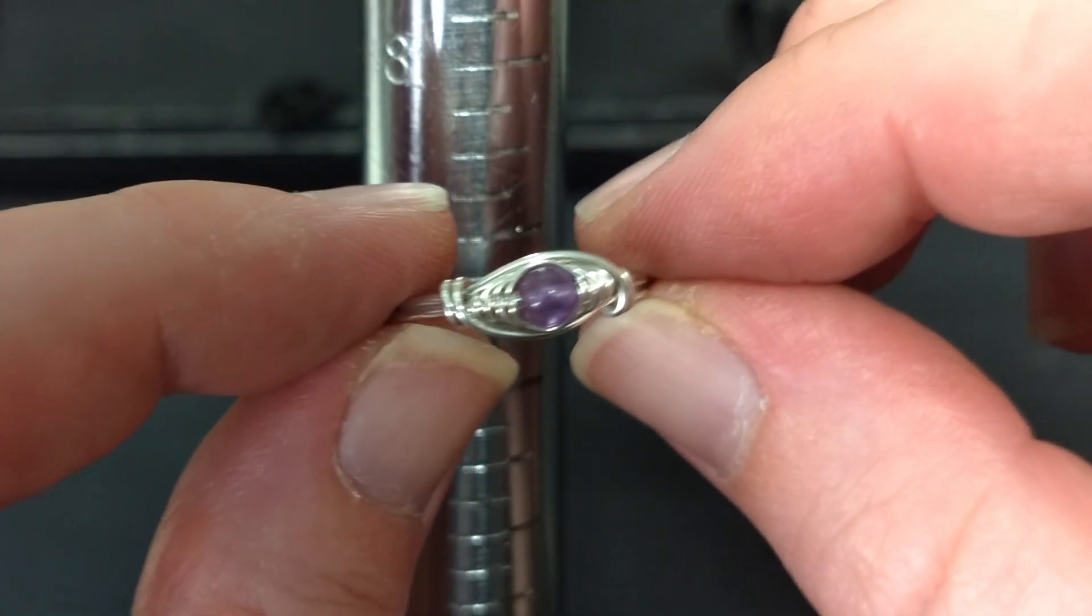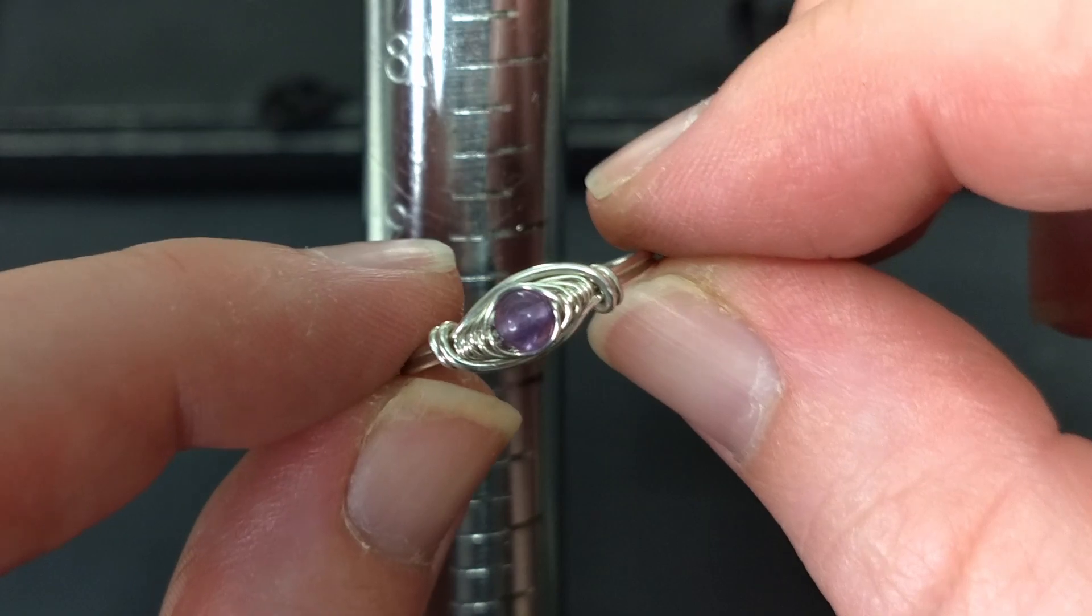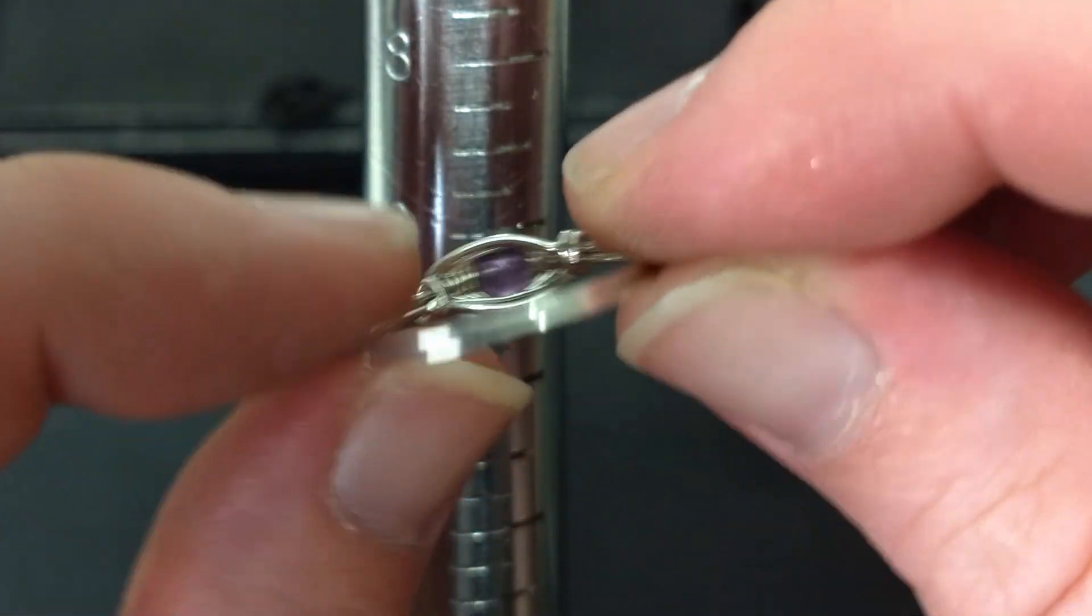Welcome back to another jewelry making tutorial. I'm Julia Bell and today we are making this wire wrapped amethyst ring.